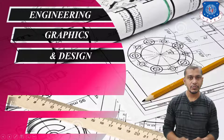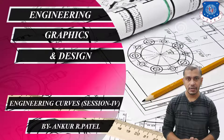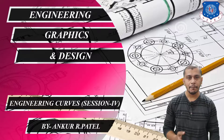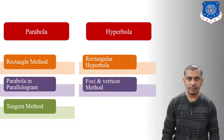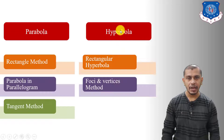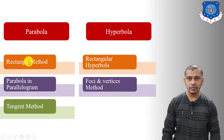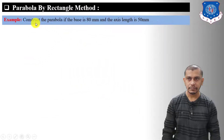Hello everyone, welcome to the lecture series of Engineering Graphics and Design. I'm Ankur Patel, and in this fourth session of engineering curves, we are going to discuss methods to construct parabola and hyperbola. For parabola, we will discuss three methods: rectangle method, parallelogram method, and tangent method. For hyperbola, we will discuss two methods: rectangular hyperbola and foci and vertices method.